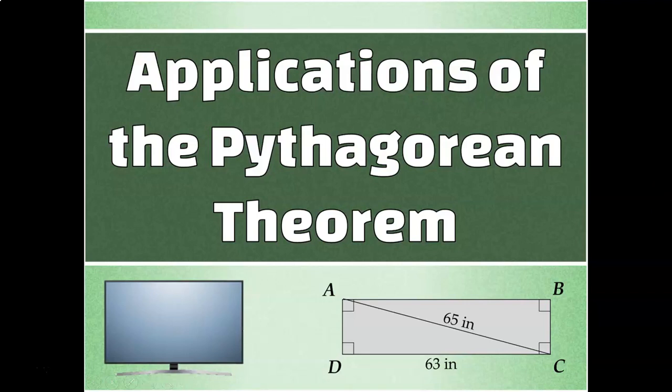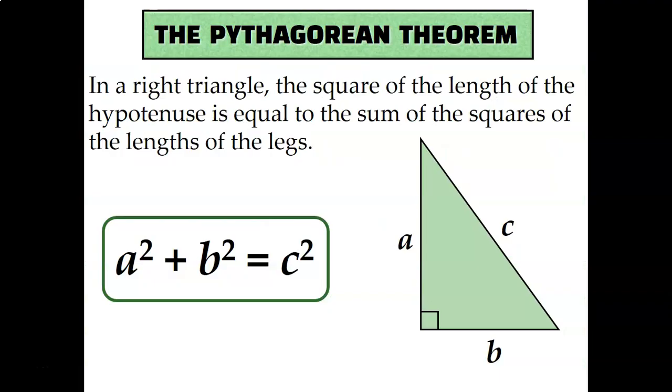Let's talk about how we can use the Pythagorean Theorem to solve real-world problems. In a previous lesson, we learned that the Pythagorean Theorem is a squared plus b squared equals c squared. But what does that formula actually mean?